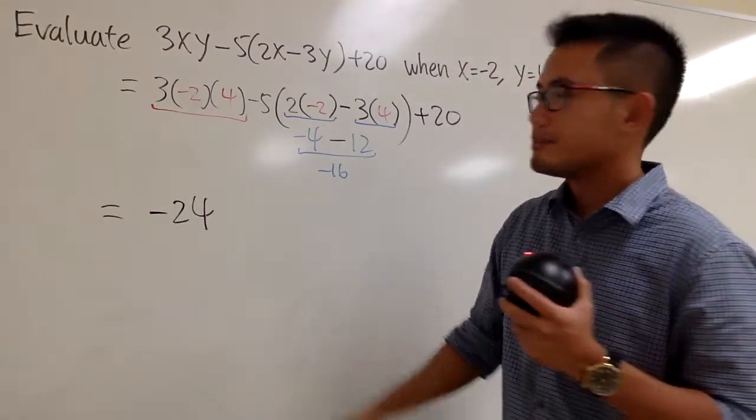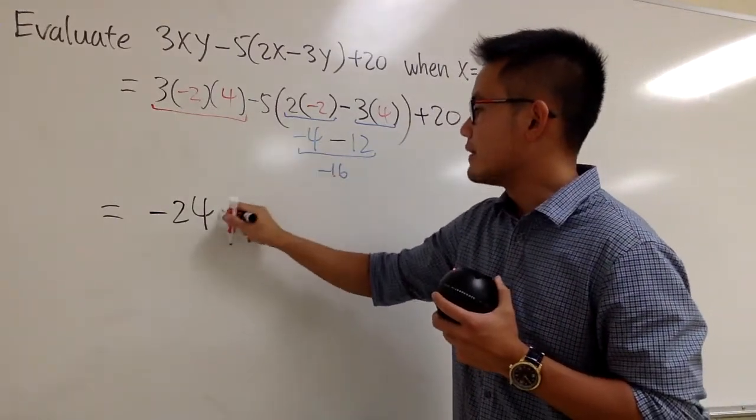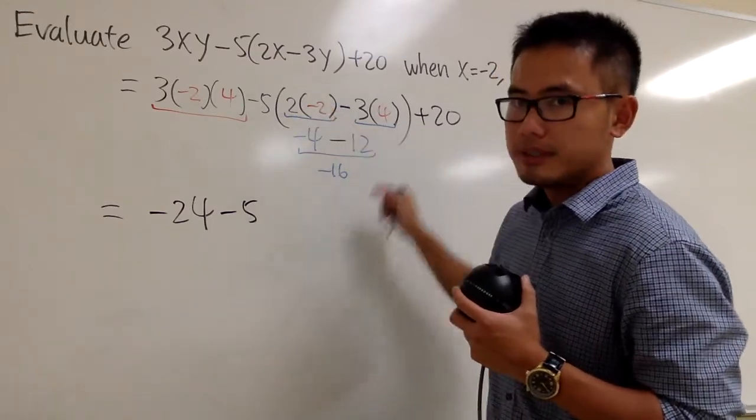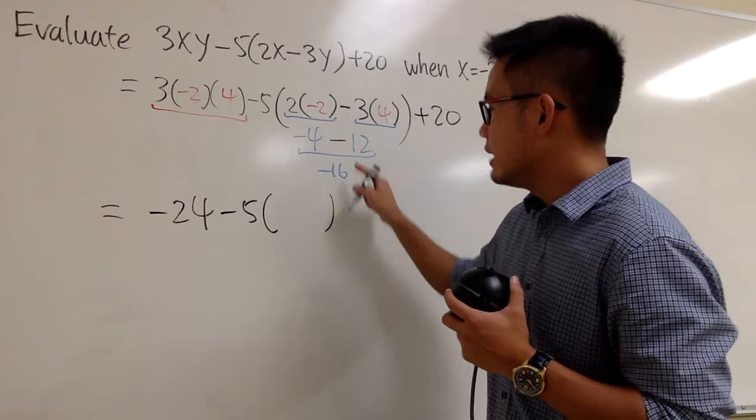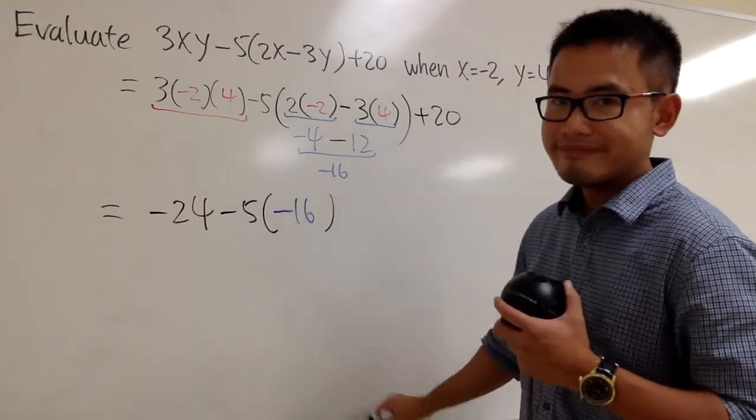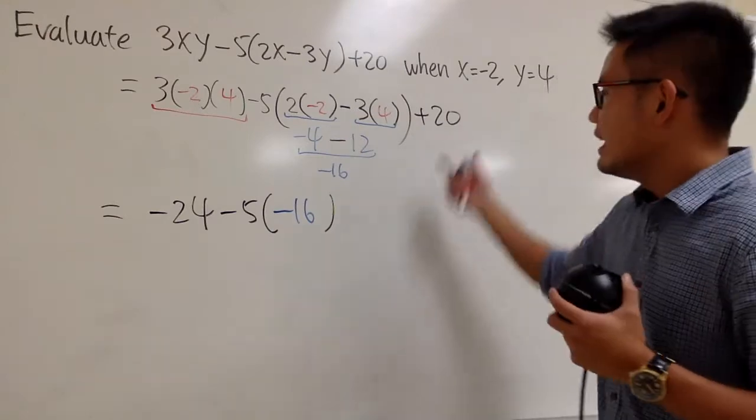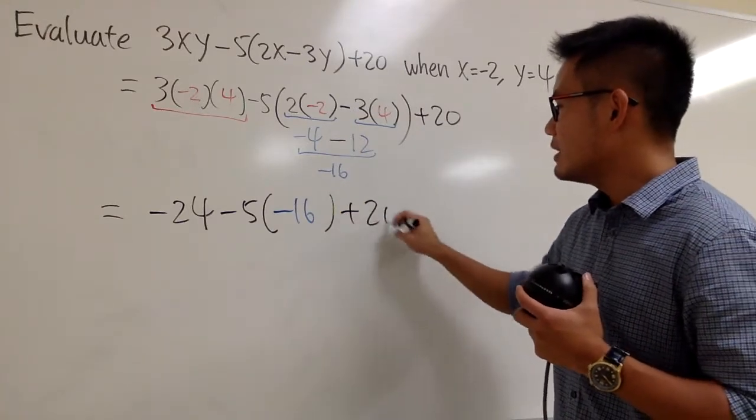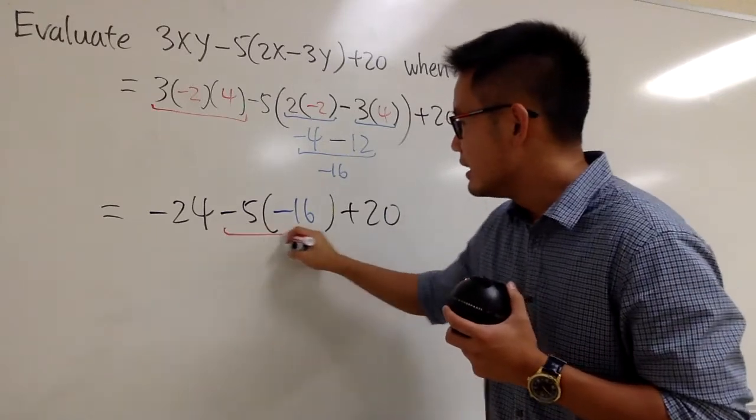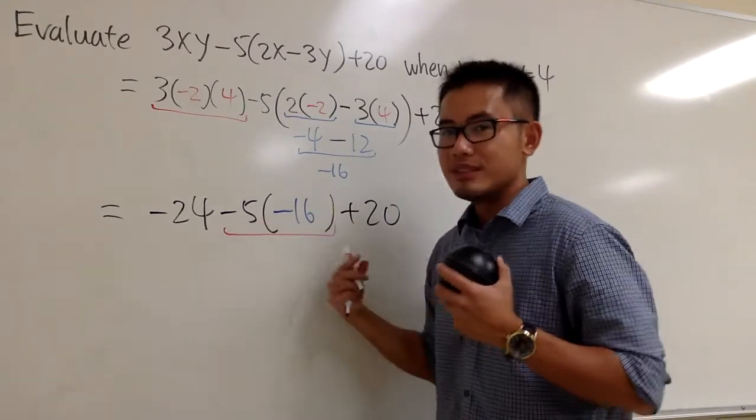And now let me bring down the minus 5. And this negative 16, it stays in the big parentheses, so I will open the parentheses. And this is the negative 16 that we got earlier. Let's put it in the parentheses. At the end we still have the plus 20. And now we have to multiply this together because the parentheses means to multiply.